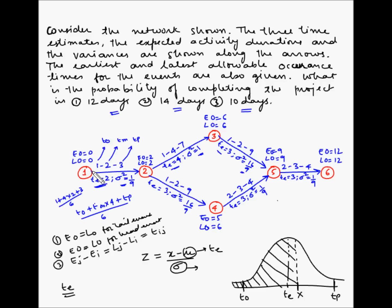For activity 2-3: condition 1 — EO = LO for the tail event: met. Condition 2 — EO = LO for the head event: both are 6, so met. Condition 3 — EO of head minus EO of tail = 6 minus 2 = 4, and LJ minus LI is also 4, and Te = 4. All three are 4, so activity 2-3 is also a critical activity.